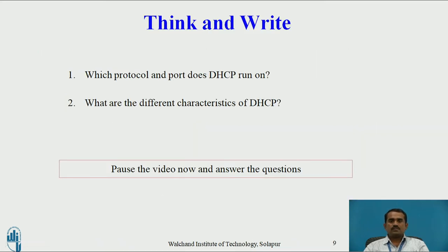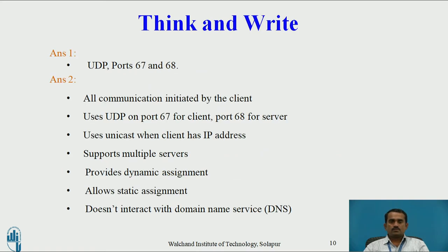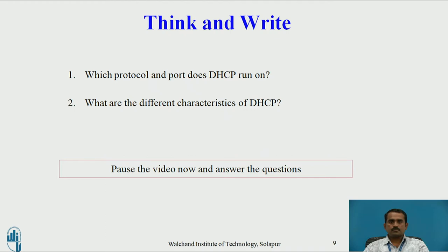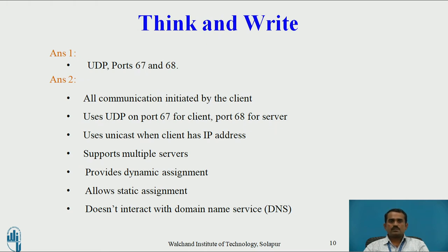Now, this is a question-answer session. Think and write. The two questions are: which protocol and port does DHCP run on? And second, what are the different characteristics of DHCP? Now pause the video and answer the above questions. The answer for the first question: the protocol is UDP, and port number 67 is used on the server side and port number 68 on the client side. The characteristics of DHCP protocol are: all communications are initiated by the client; uses UDP port 67 for the server and port 68 for the client; uses unicast when the client has an IP address; supports multiple servers; provides dynamic assignment; allows static assignments; and does not interact with DNS services.